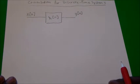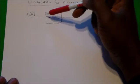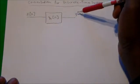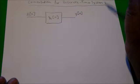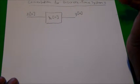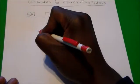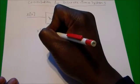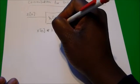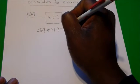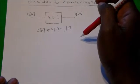The output is y of n, a discrete output. The thing is, we cannot simply multiply the input and impulse response together to get the output when we're in the time domain. We can do that in the frequency domain, the s domain, or the z domain, but not in the time domain. What we need to do is compute the convolution: x of n star h of n, which equals y of n.